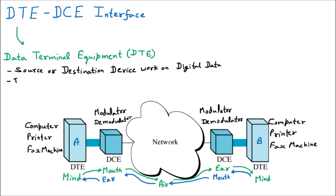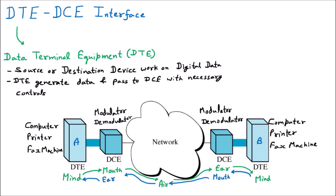DTE generates data and passes it to the DCE with necessary controls — just like our mind sends data to the mouth with controls, meaning the mouth should have control while speaking. Similarly, DTE devices like computer, printer, and fax machine give the data to the DCE, which is the modulator and demodulator, and they send the data further with controls such as how much data to send and what is the speed of that data.